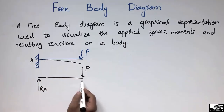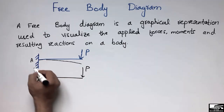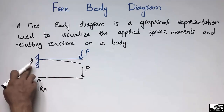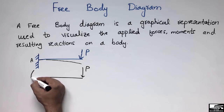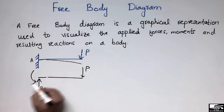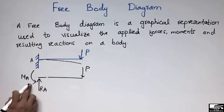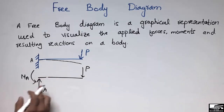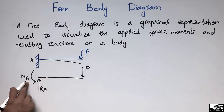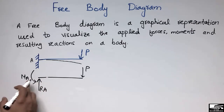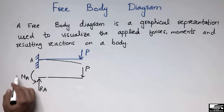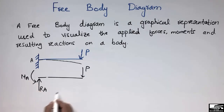Due to the point load, a moment will also be created at the fixed support of the cantilever beam. In the free body diagram, I can show this moment at the fixed support, which we call MA. So this is the free body diagram for this cantilever beam with a point load at its free end.